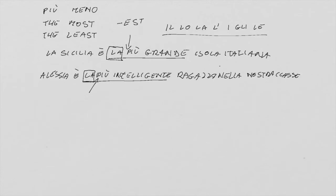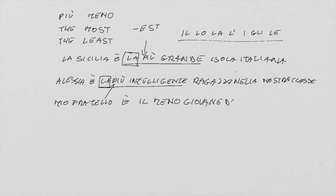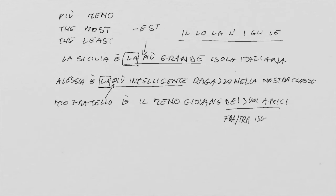Another example: My brother is the least young of his friends. Mio fratello è il meno giovane dei suoi amici. I could also say, instead of 'of his friends,' 'among his friends,' which in Italian would be fra i suoi amici or tra i suoi amici.